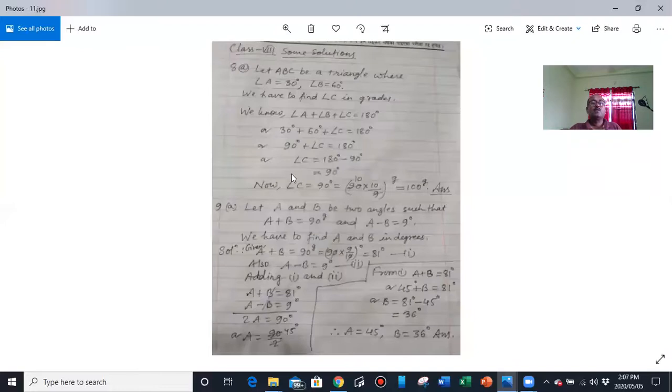Let's move forward. See, the questions that I have given earlier, from there I have picked up this question. In a triangle, two angles are given, one is 30 degree, another is 60 degree. So you have to find the third angle. For your convenience, I have supposed triangle ABC, in which angle A is 30 degree, angle B is 60 degree. Then you have to find the measurement of angle C, but you have to find in grades, not in degree.